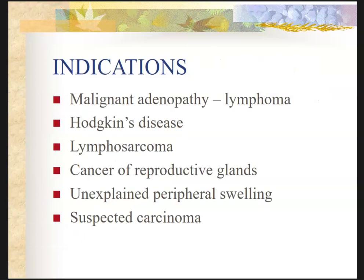Why would we do lymphographic studies? Once upon a time, if people had malignant adenopathy or lymphomas, the doctor might use lymphography to determine where the lymph nodes were in order to get ready for surgery and know where to operate. Indications include Hodgkin's disease, lymphosarcoma — a very dangerous form of lymphatic cancer — cancer of the reproductive glands, unexplained peripheral swelling such as edema without congestive heart failure, and suspected carcinoma. Lymphography has also been done to find the upstream lymph nodes associated with breast cancer.